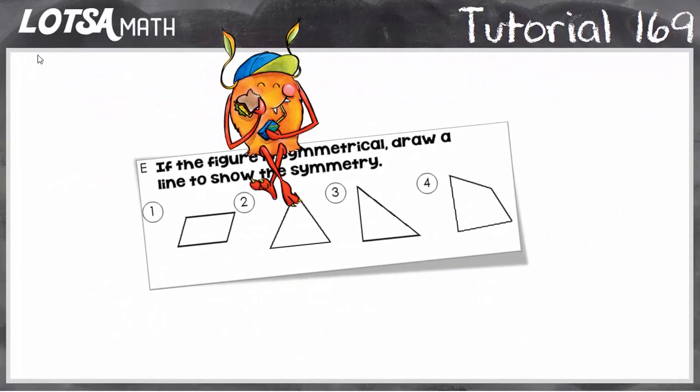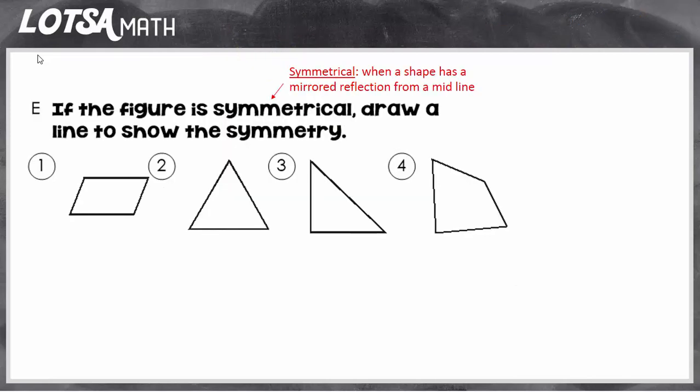For these questions, we're going to decide if a figure has symmetry. So the directions say if the figure is symmetrical, which means that a shape has a mirrored reflection from a midline. If it does have that, we're going to draw a line to show the symmetry.